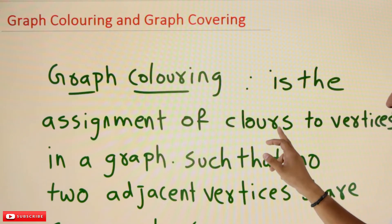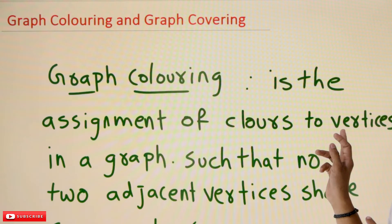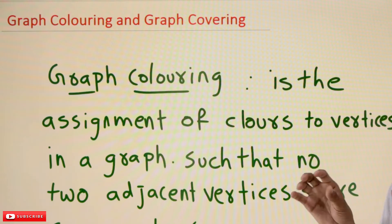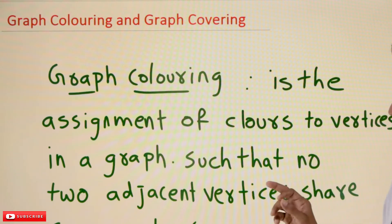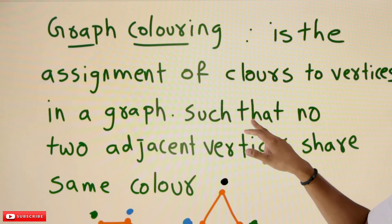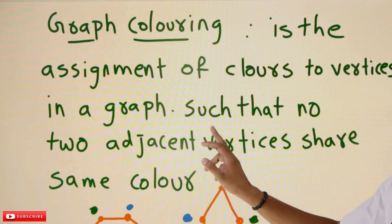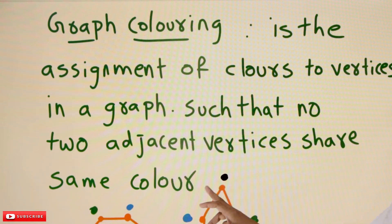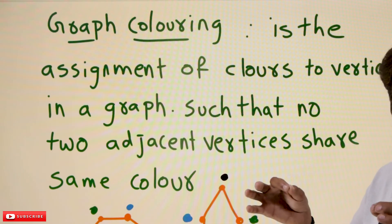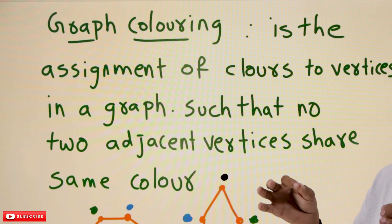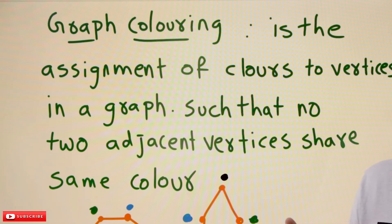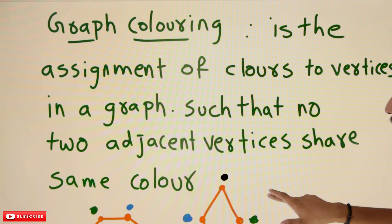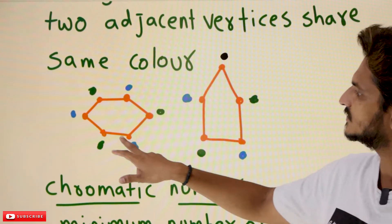Coming to today's class: graph coloring is the assignment of colors to vertices. We should assign colors to the vertices in a graph such that no two adjacent vertices share the same color. If you take two adjacent vertices, those two vertices should not share the same color — that is what the concept of graph coloring means.